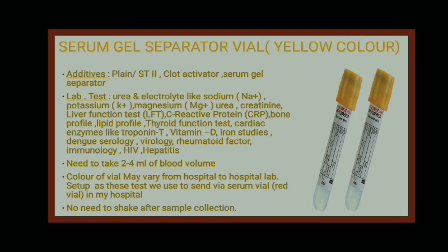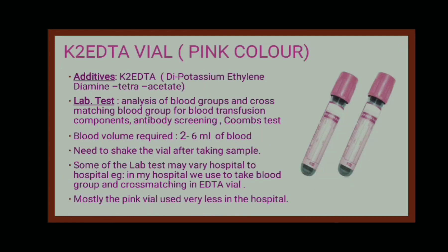The next is the pink color vial, which contains K2 EDTA — dipotassium ethylene diamine tetra-acetate. The lab tests performed with this vial include blood group analysis and cross-matching for blood transfusion and transfusion components, and antibody screening and Coombs test. We need 2 to 6 ml of blood and must shake it 8 to 10 times so it mixes with the K2 EDTA to prevent coagulation. This may vary by hospital — some use the standard EDTA vial instead.